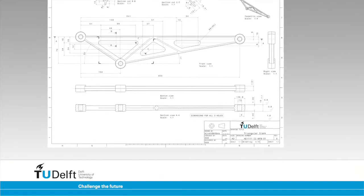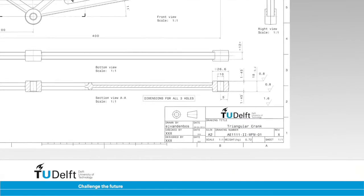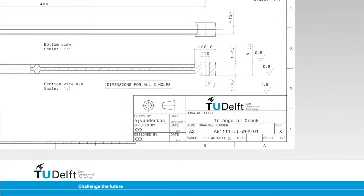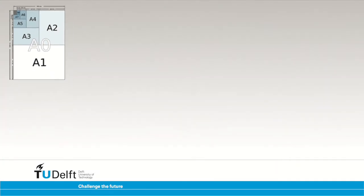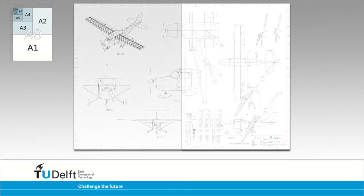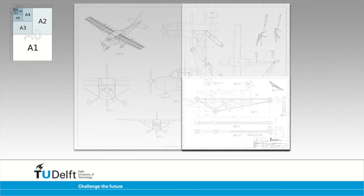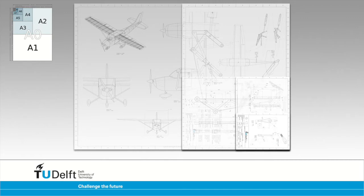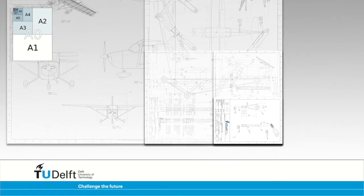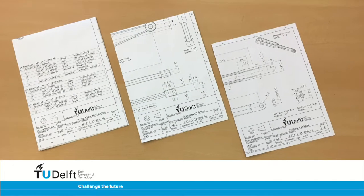The right bottom corner of the drawing is not a random choice. European engineers make their drawings on sheets sized according to the DIN A system. The base of this system is an A0 sheet, which has an area of one square metre. Half of the A0 gives an A1 sheet, half of the A1 gives an A2 sheet, half of the A2 gives an A3, and half of an A3 sheet gives the common A4, which is the standard size used for printed documents.